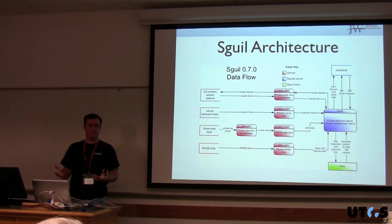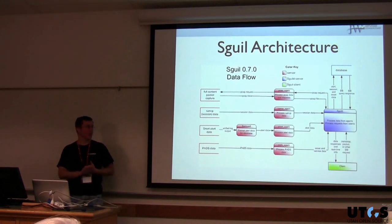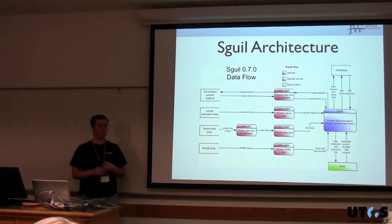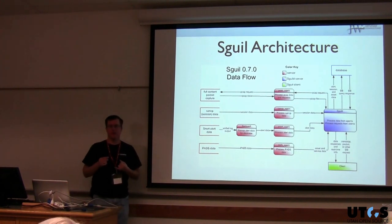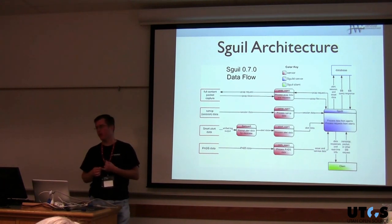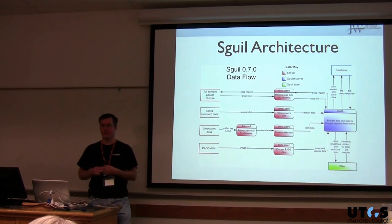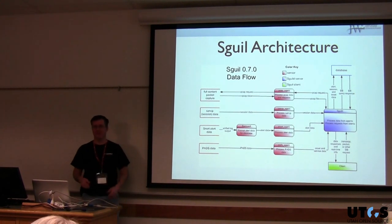Once I got it up it was great. I was able to respond to things that were happening. I found something one time — I got an alert that said it looked like a Social Security number crossed the network on port 80. Sure enough, a developer hadn't bothered to require HTTPS on an internal application, so we were passing SSNs in the clear all the time. Got that taken care of.